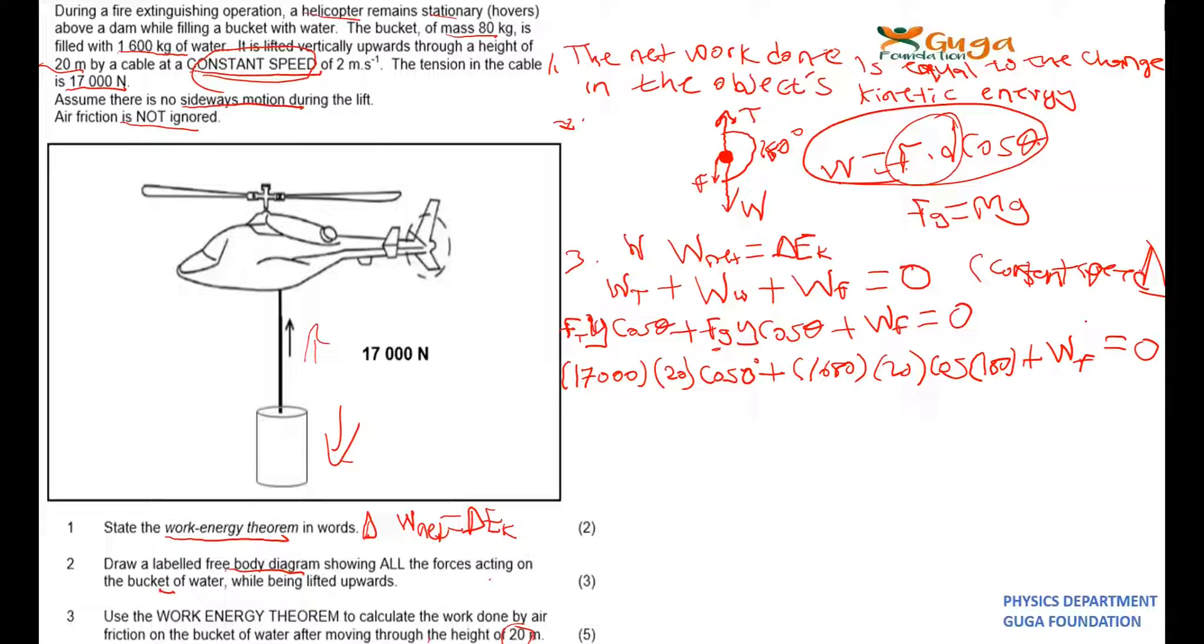So now if you use the calculator, the sum of this you should get 340,000. Then you add here, you should get a negative because it's negative one, so you should get a negative answer of 329.8.